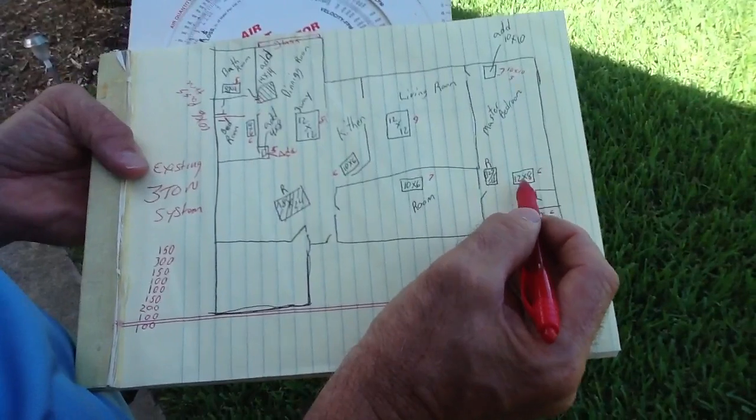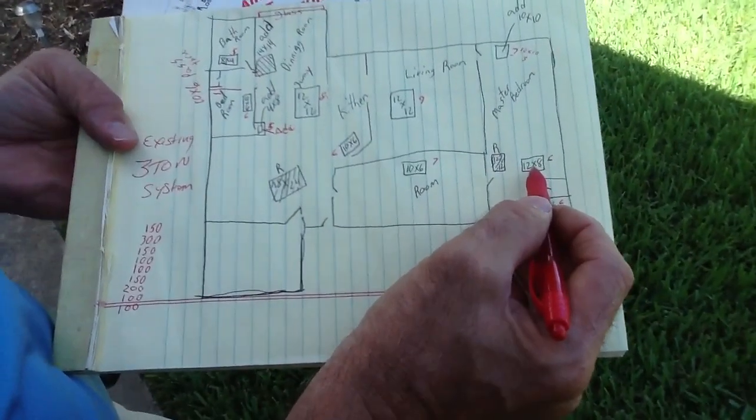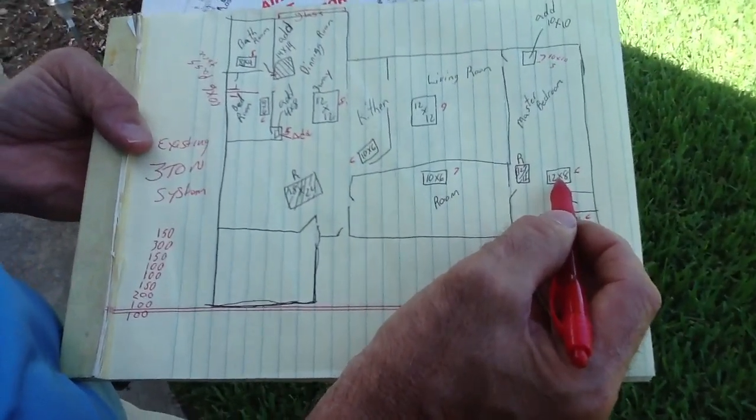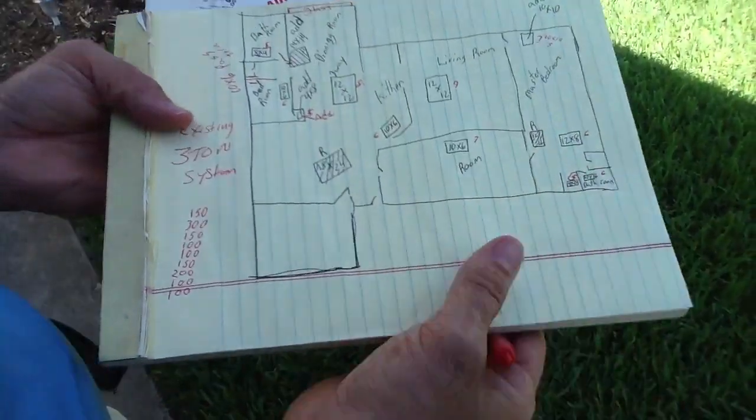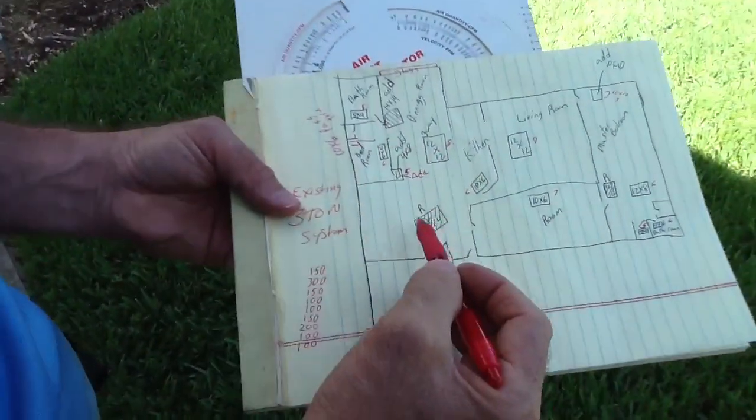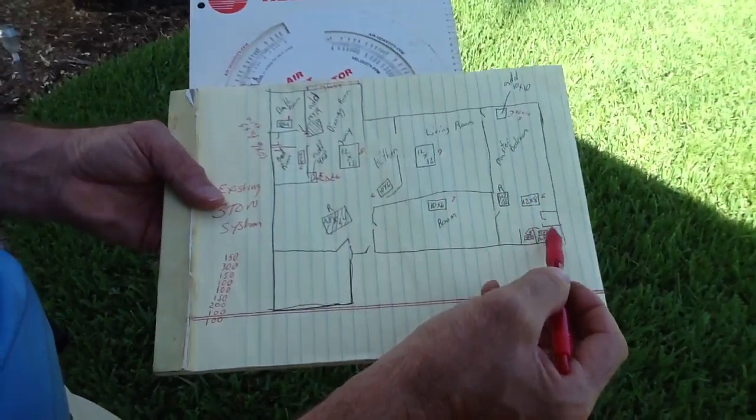Also in this same room is an existing 12x8 one-way grill. So what I want to show you is we drew out the house, we plotted the grills.